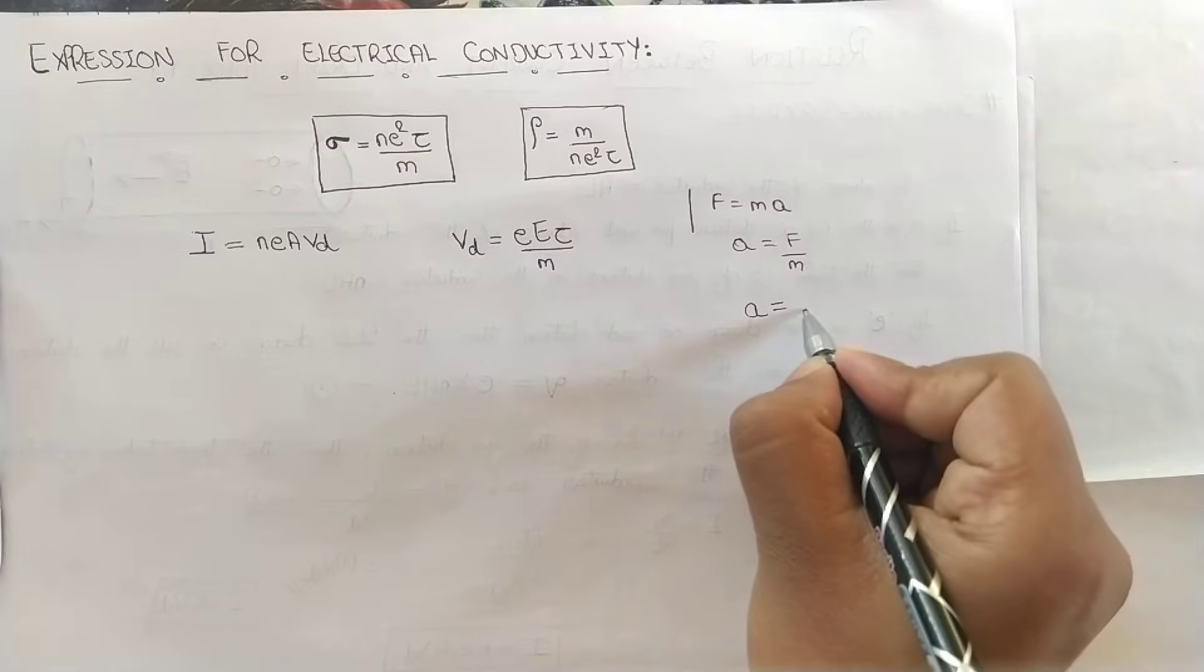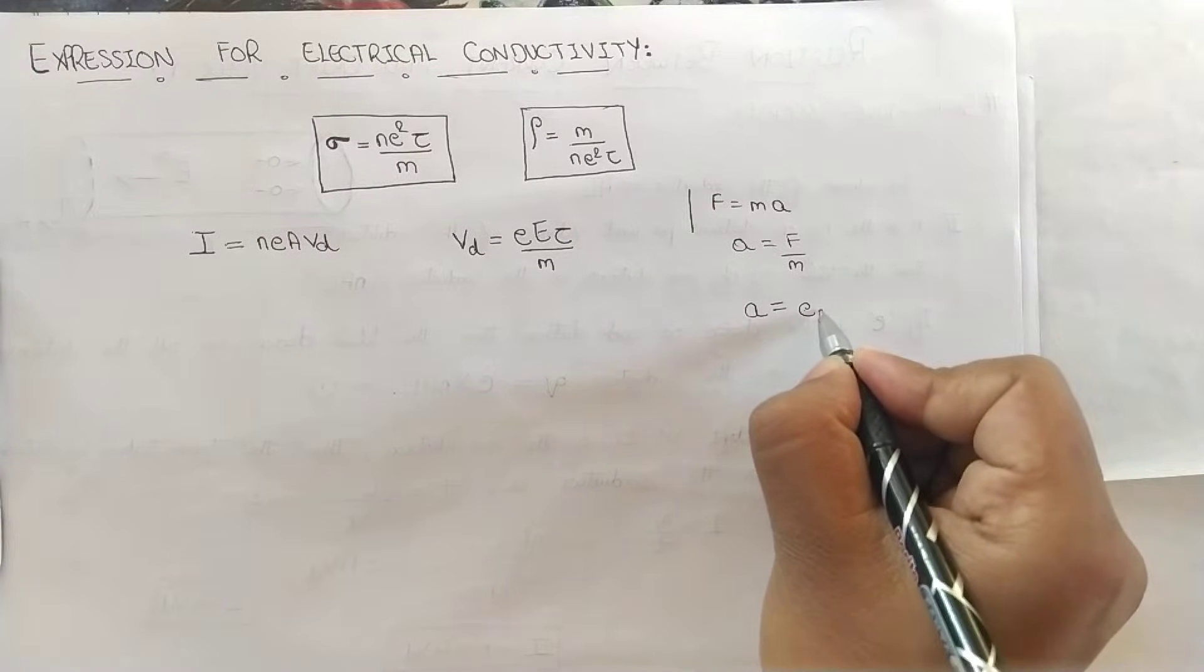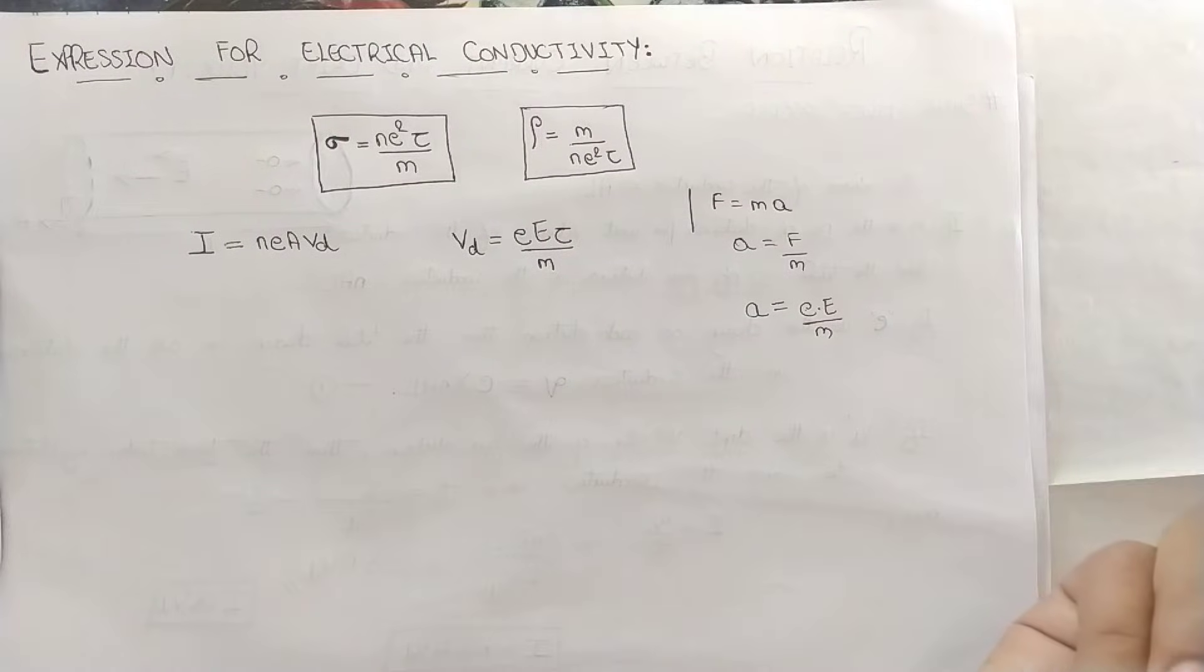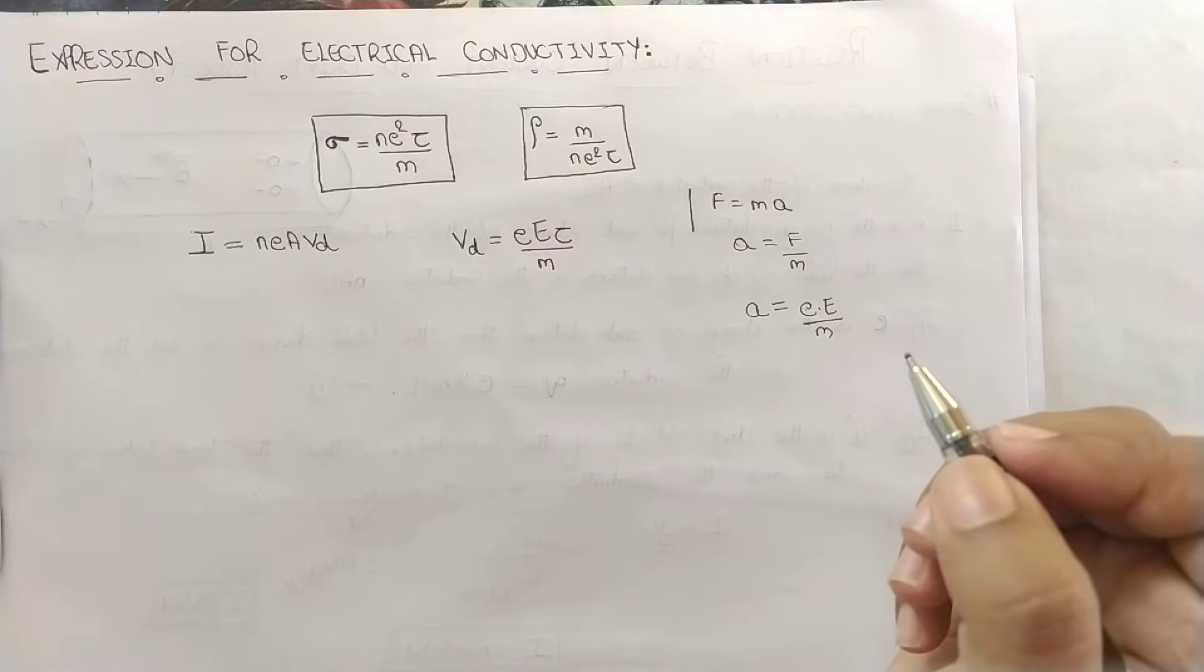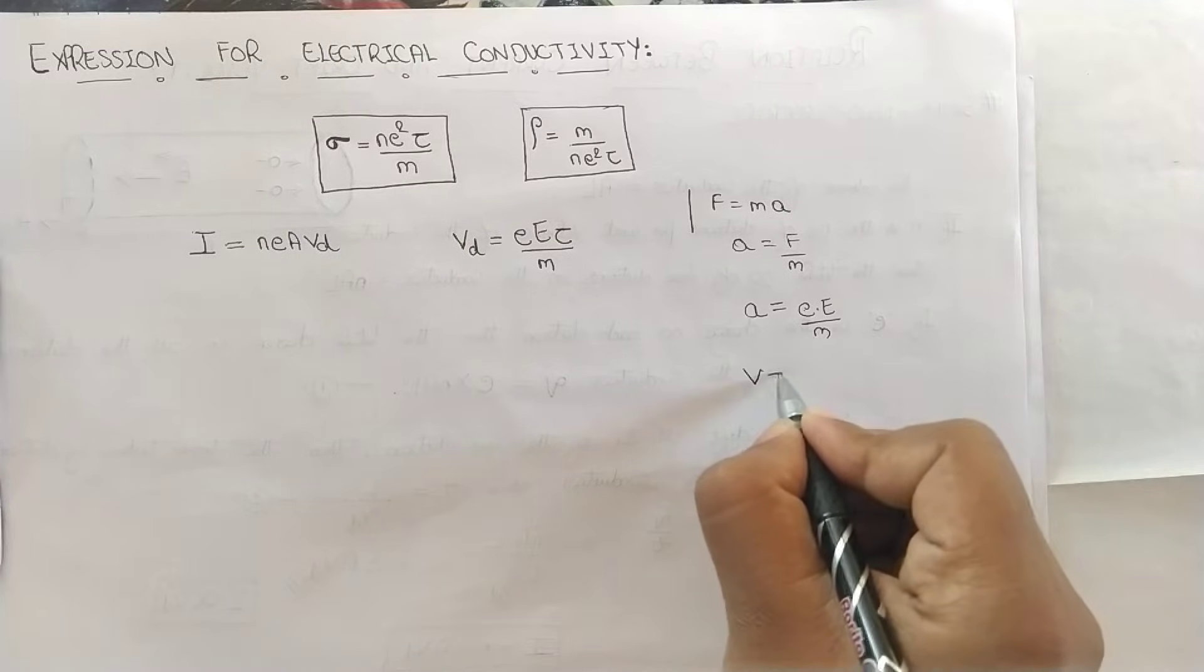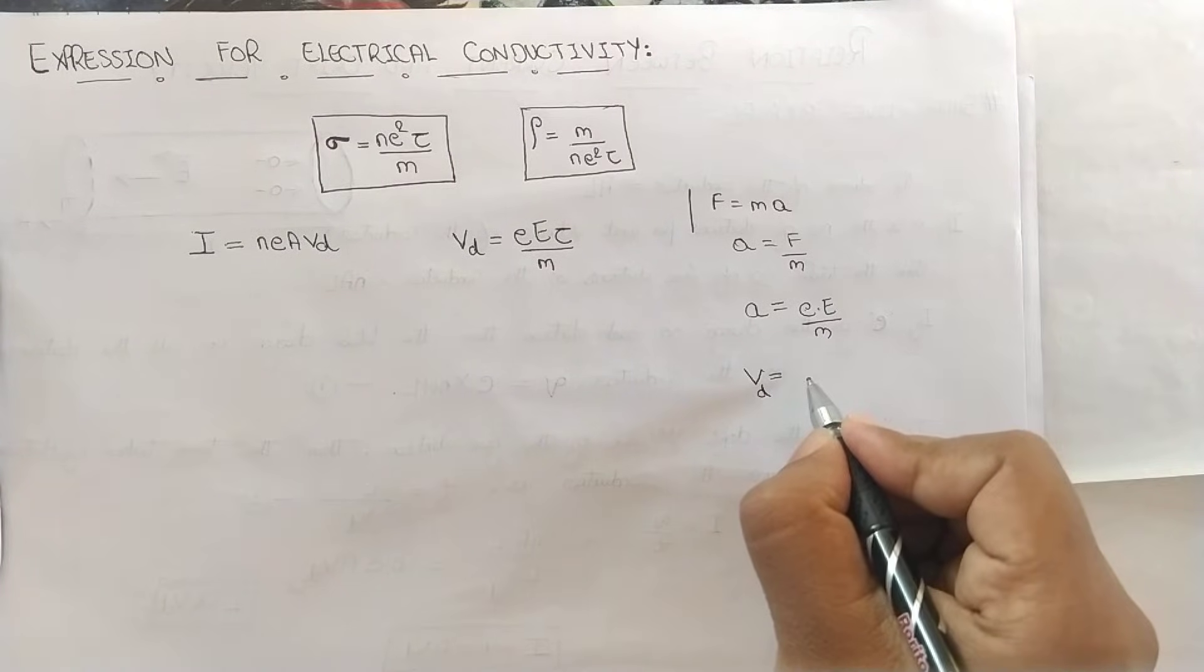As you all know, F is nothing but the charge in each electron multiplied by electric field applied divided by M. This gives an expression for acceleration. Then what is velocity in terms of acceleration? Velocity is nothing but here drift velocity. Drift velocity is time multiplied by acceleration.